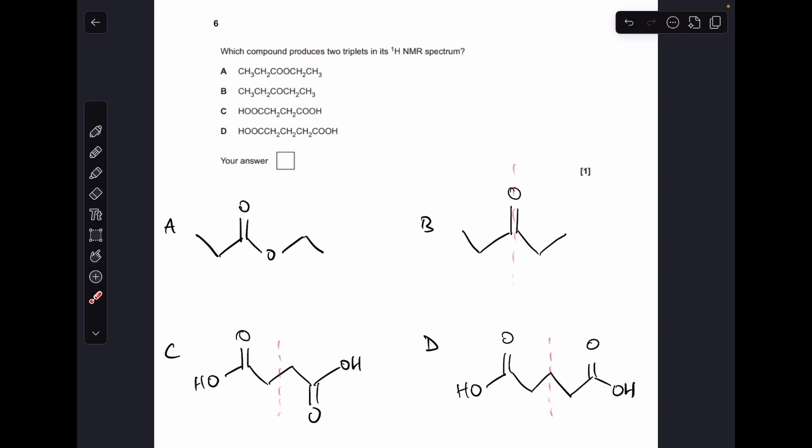Number six, which compound produces two triplets in its proton NMR spectrum? So you can see I've already drawn them out and put lines of symmetry on if they've got one. So let's look at A. So these protons here are adjacent to the CH2 here, so that will be a triplet. These protons are adjacent to three, so they'll come out as a quartet. And then on the other side, this is not a symmetrical molecule, so we're going to see another quartet here because it's adjacent to CH3. And these CH3 protons are adjacent to a CH2, so they will come out as a triplet. So this one has actually got the two triplets on, so the answer was A.